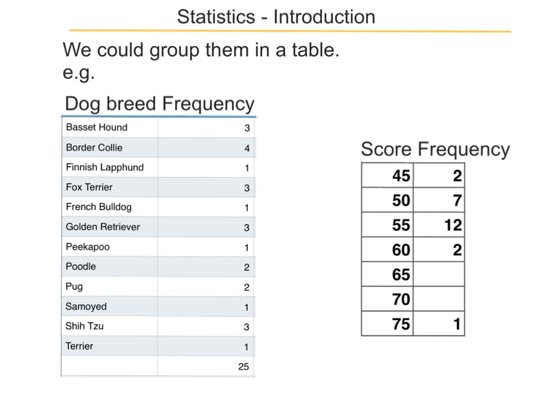Sometimes we need to group the data. The table on the right has data grouped so that the scores are between 45 and 49 - two people; 50 and 54 - seven people, etc. So a table is a great way of showing data.